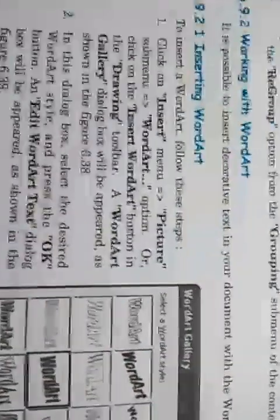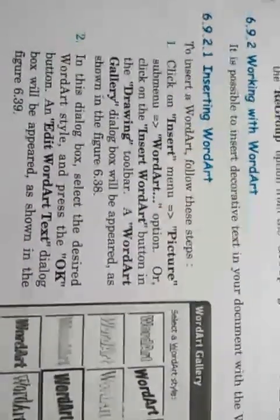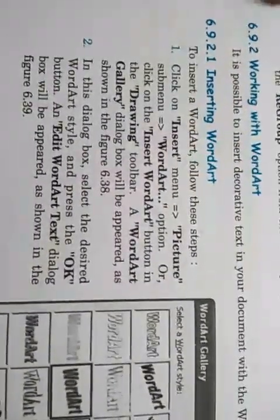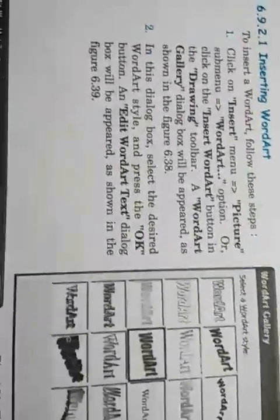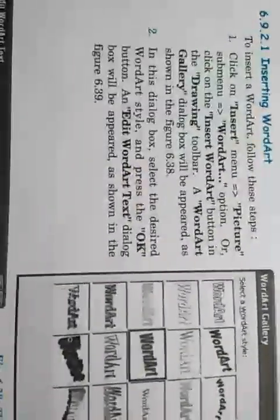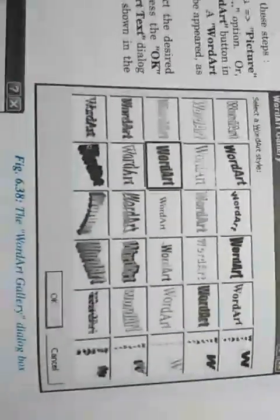The next option from the drawing toolbar is WordArt. Artistic or decorative text in your document is called WordArt. You can select this option from the Insert menu or from the drawing toolbar. A dialog box will appear showing different types of artistic designs. Select any design and another dialog box will appear where you type the text you want in that style.